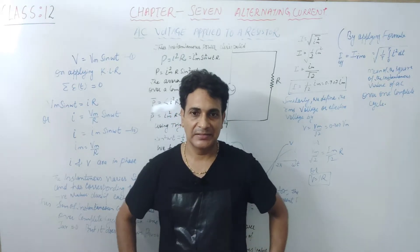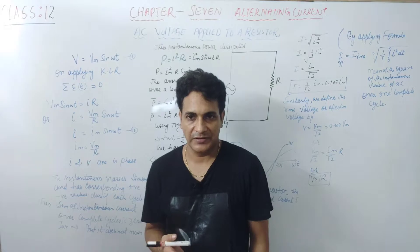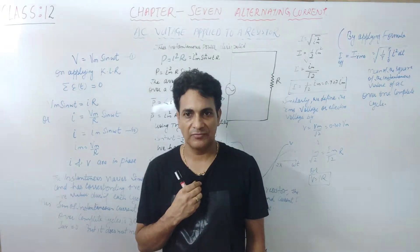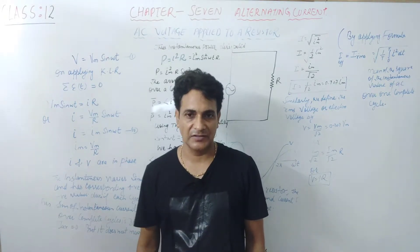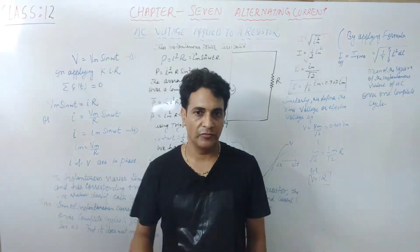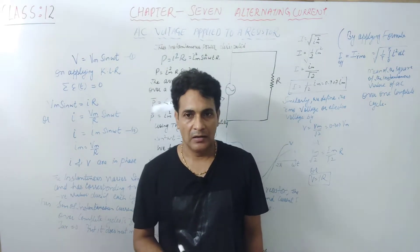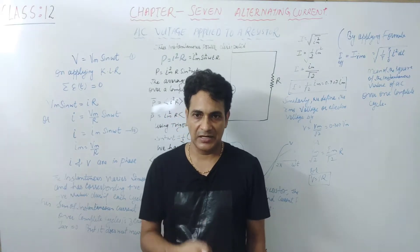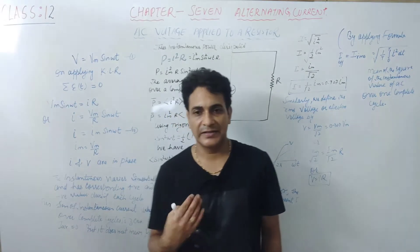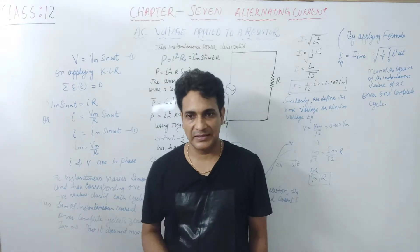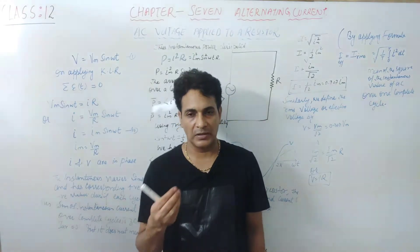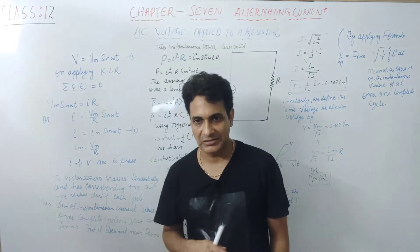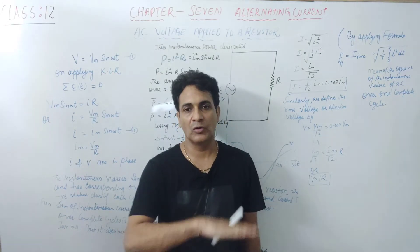But voltage and currents that vary with time are very common. The electric supply in our homes and offices has a voltage that varies like a sine function with time — its magnitude varies with time. Such a voltage is called alternating voltage, and the current in a circuit driven by it is called alternating current.